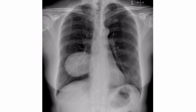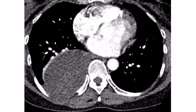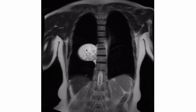On this chest X-ray we can see the outlines of the hilar vessels through the mass. We can also see the right heart border, which indicates that the mass is in the posterior mediastinum. This is confirmed on the lateral view and on CT. The MRI scan reveals the mass is a schwannoma.